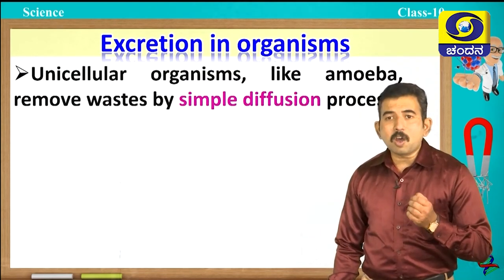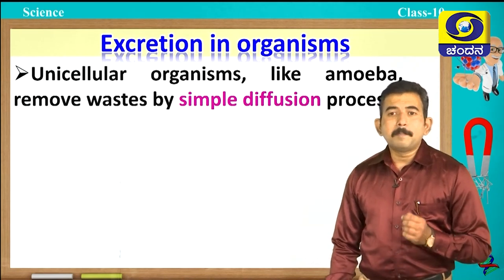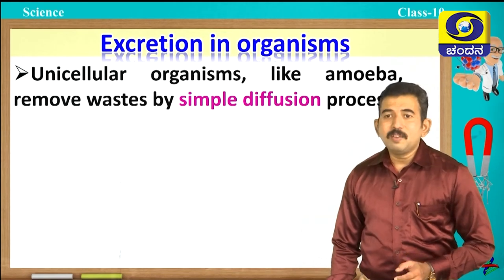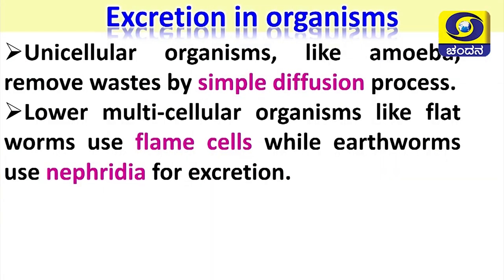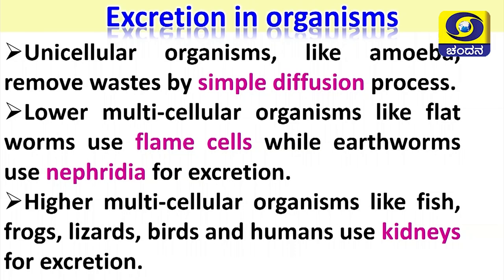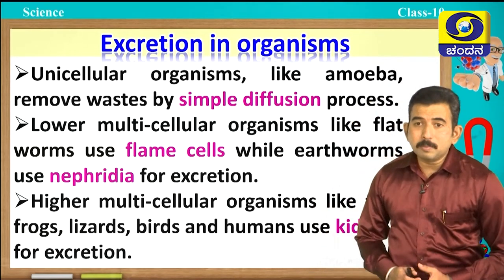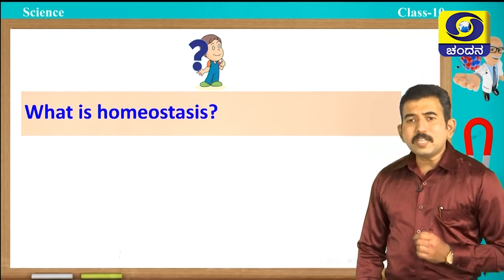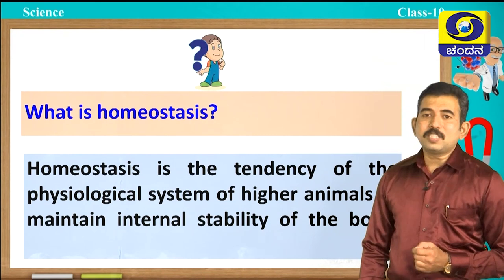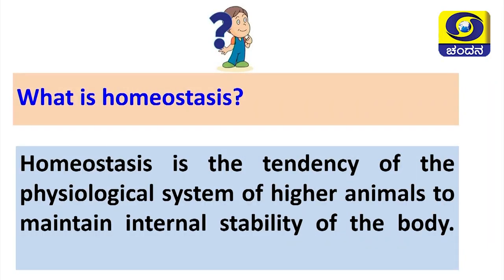Higher animals like fishes, frogs, lizards, birds, and humans use kidneys for excretion. Different organisms possess different excretory organs. What is homeostasis? Homeostasis is the tendency of the physiological system of higher animals to maintain internal stability of the body.